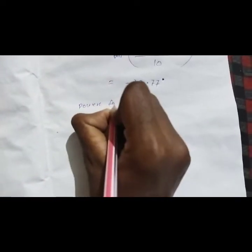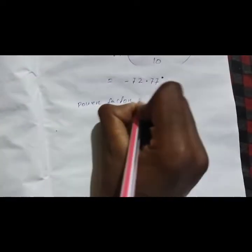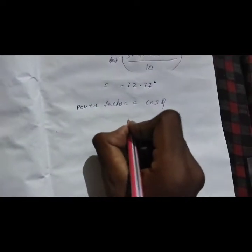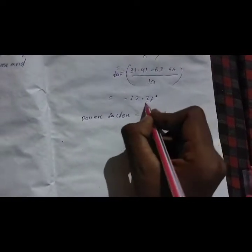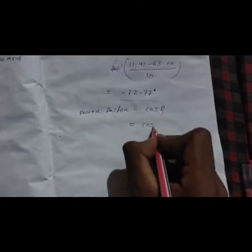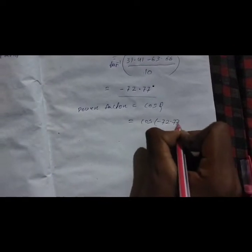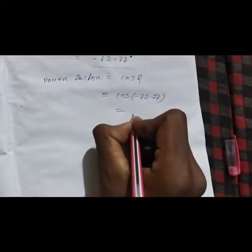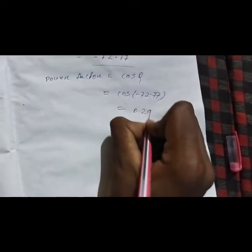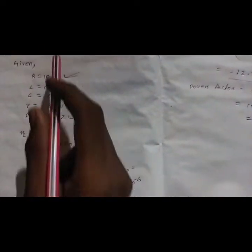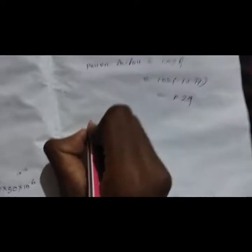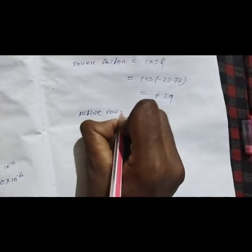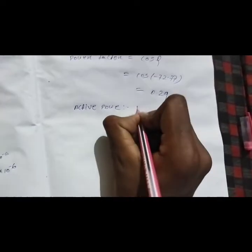Then find the power factor. Power factor = cos φ, so cos(-72.77°) = 0.29.